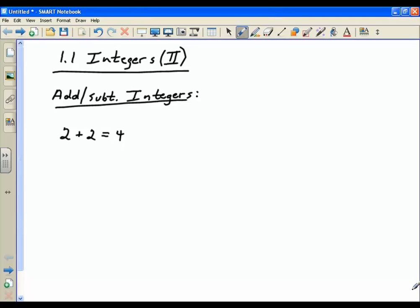Notice for me that this 2 is positive, as is this one. And your answer is also positive. You just combined the two numbers, 2 and 2, and got 4. So you've been doing that probably since grade school.